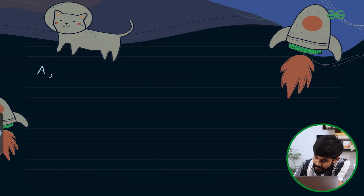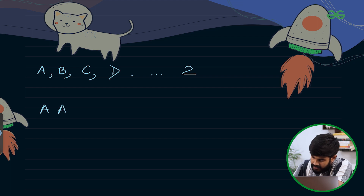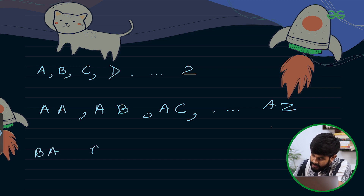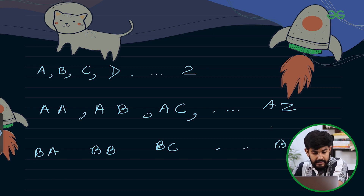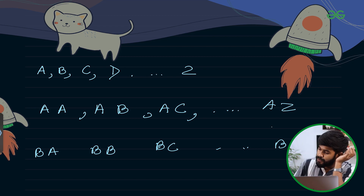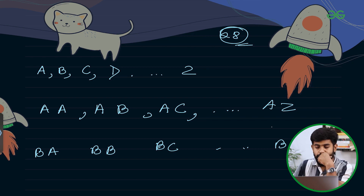This problem tells us that the given values are something like A, B, C, D... Z, and after that it is AA, then AB, then AC... AZ. After AZ it would be BA, then BB, then BC... BZ, and then CA, CB, CC and so on. You need to tell what value would be at a given position — say position 28.